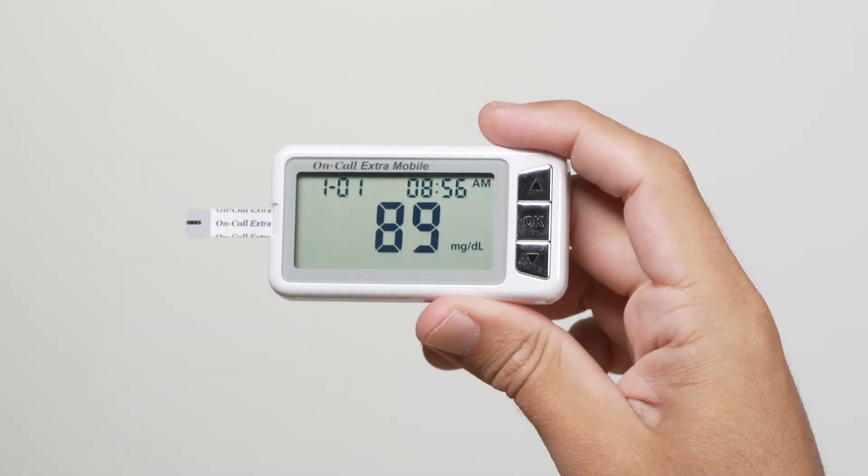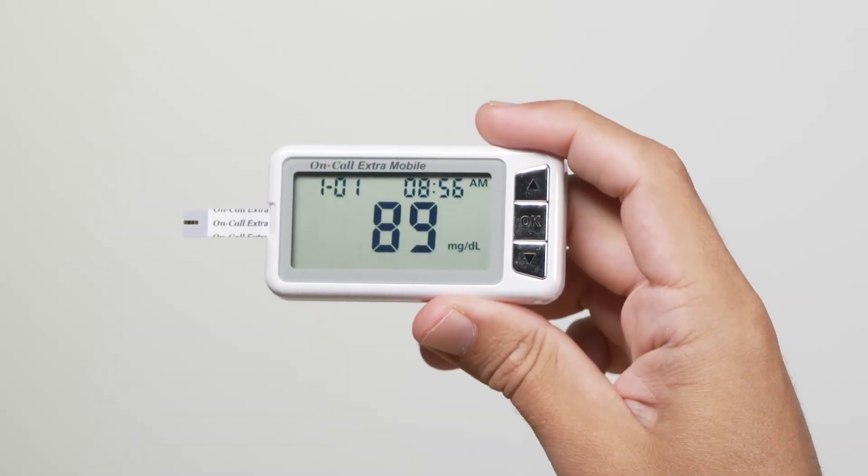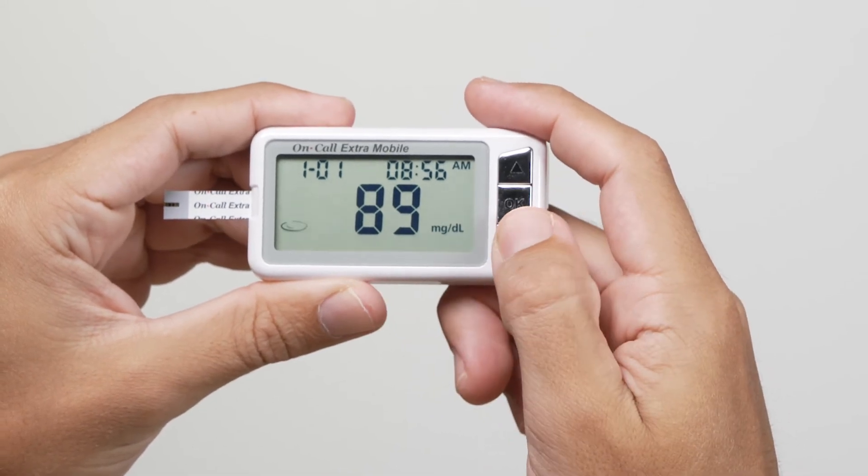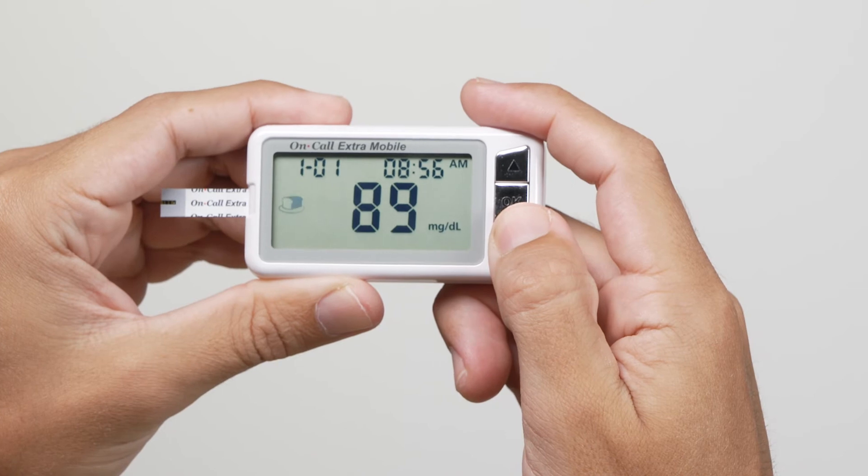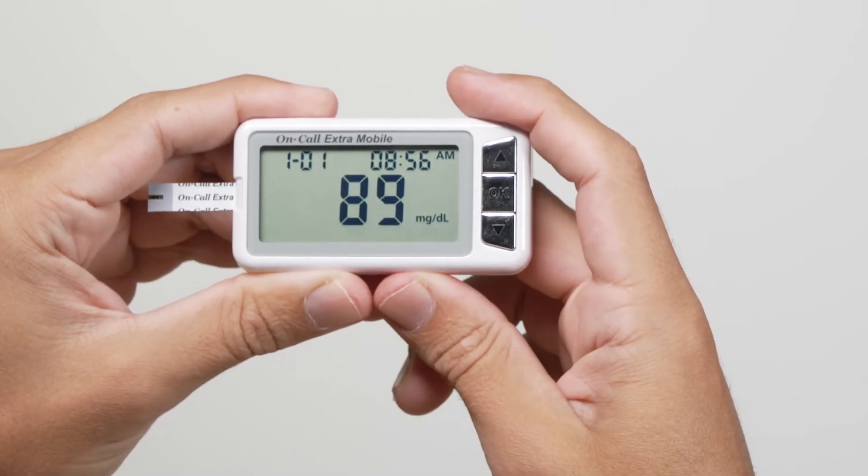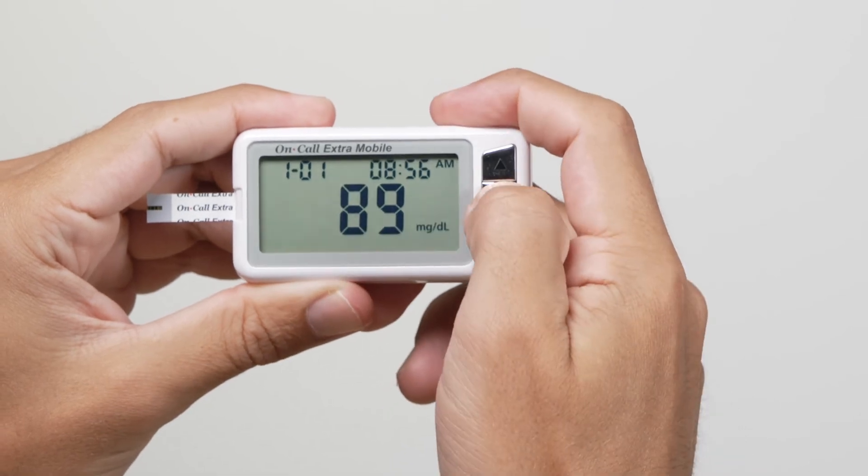To mark invalid results and prevent them from being included in the 7, 14, 30, 60, and 90 day averages, press the up arrow or down arrow button. A pound sign will appear on the display to show that the result will not be included when calculating the 7, 14, 30, 60, and 90 day averages.